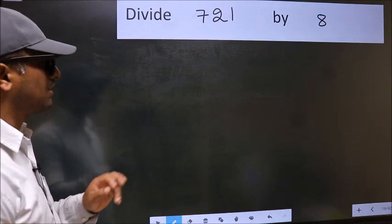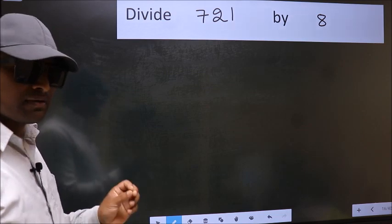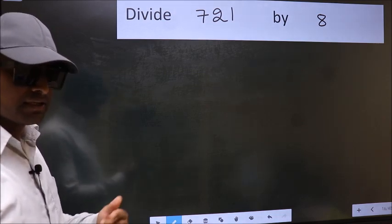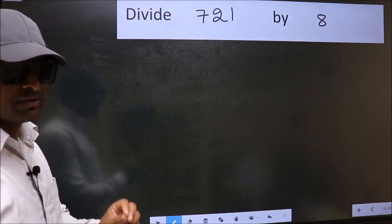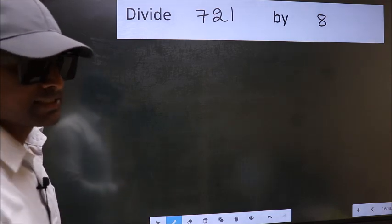Divide 721 by 8. While doing this division, many do this mistake. What is the mistake that they do? I will let you know. But before that, we should frame it in this way.